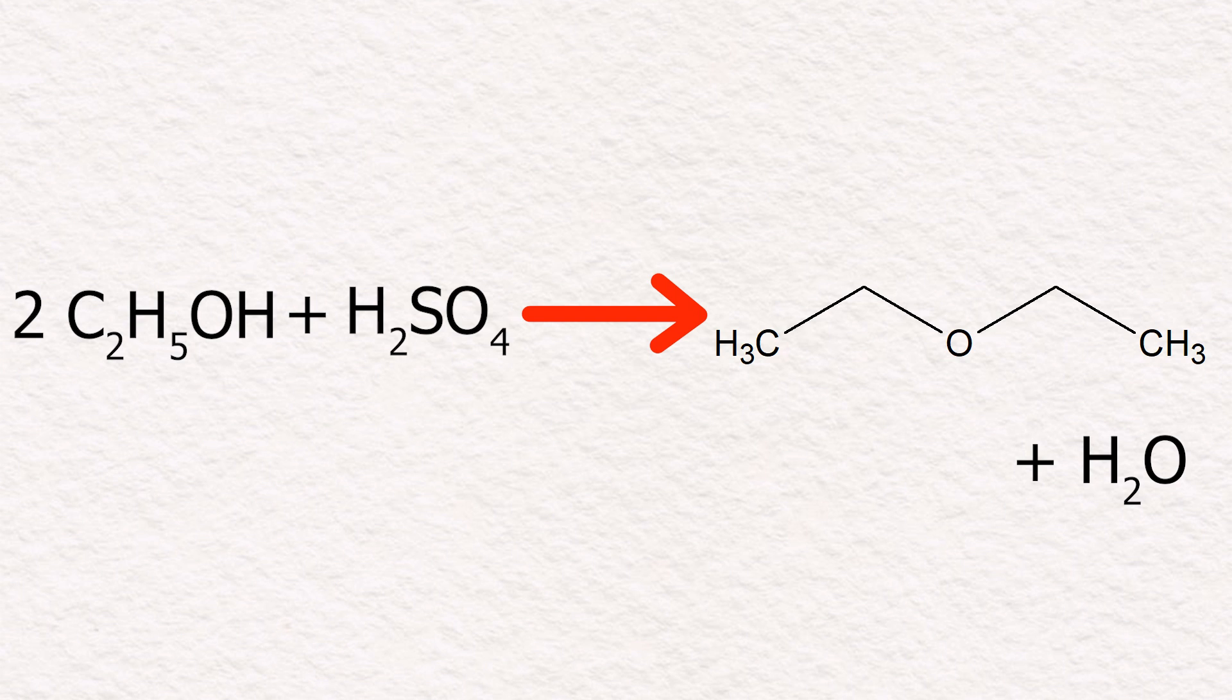In this video, I will be using ethanol and sulfuric acid to make diethyl ether. Diethyl ether is a very useful solvent for many applications, and I will be using it to make Grignard reagents, which can only be done in anhydrous diethyl ether.